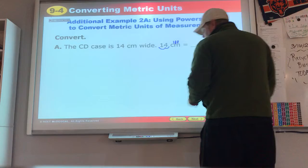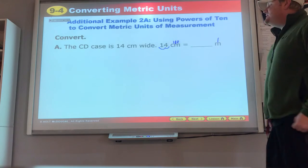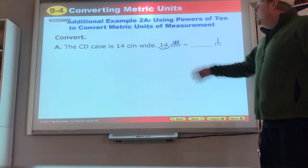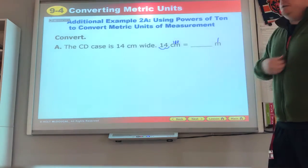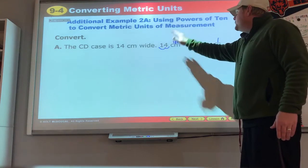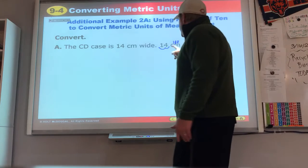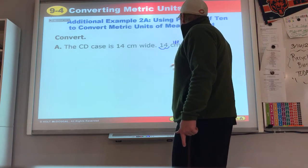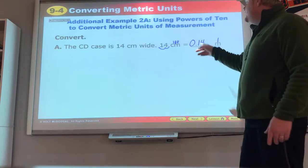The CD case is 14 centimeters wide. Centi, and we're going to meters. 100 centimeters makes one meter. Centi tells us there's 100 of these that make the next one. We are going from something small to something bigger, so we know we're going to divide. So we take that 14 and we divide by 100. One, two, 0.14 is our answer and that is much smaller than 14.